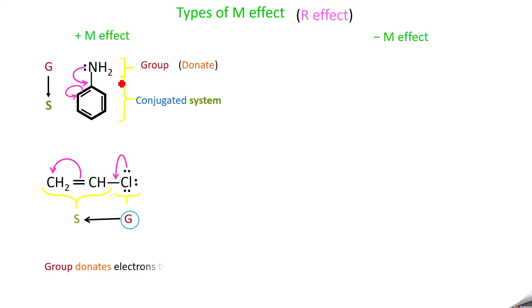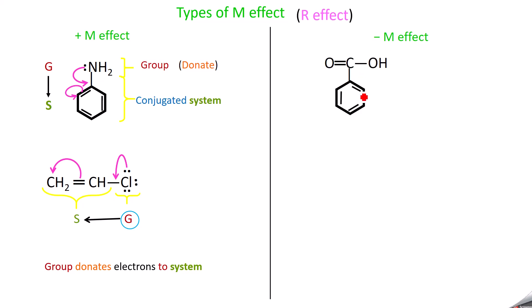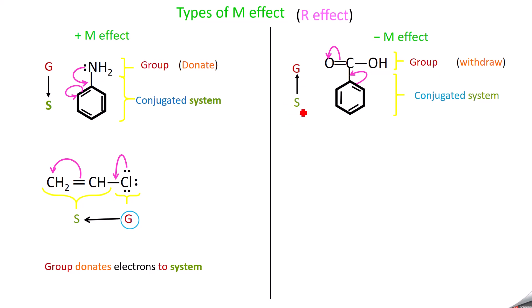In plus M effect, the group donates electrons to the system. Next, minus M effect. Take benzoic acid as an example. The benzene ring is the conjugated system and the COOH group is the substituent. The pi bond shifts towards oxygen because oxygen is more electronegative than carbon, then further into the system. Here electrons migrate from the system to the group — the group withdraws electrons from the system. This comes under minus M effect or negative mesomeric effect, also written as −R effect.